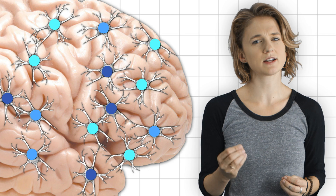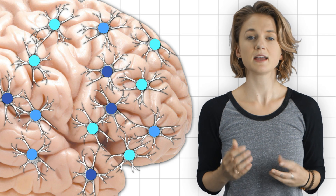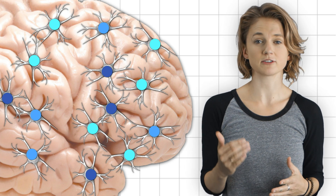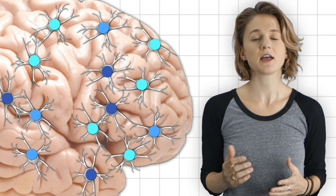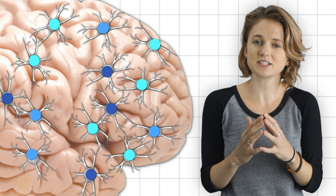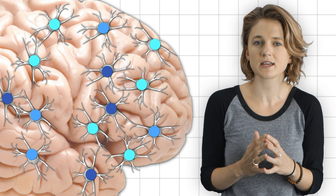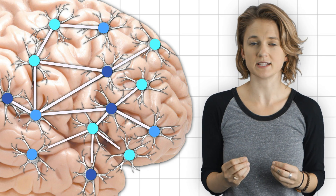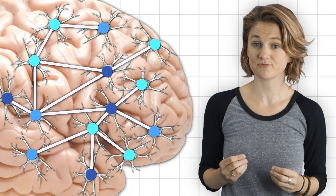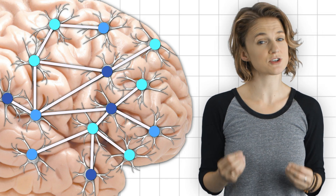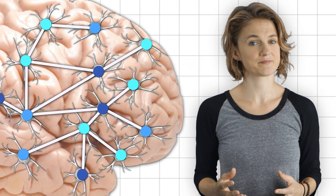Each neuron is a vertex. If, during our little time slice, there is an active connection between two neurons, connect their representative vertices by an edge. That's the neural network.